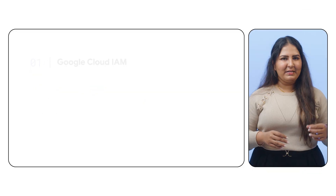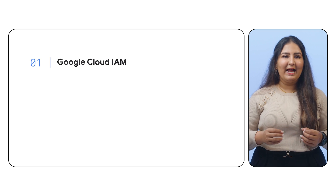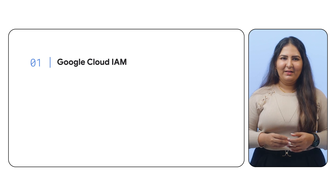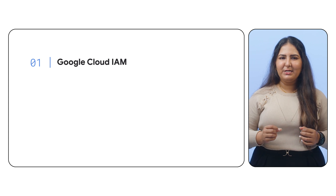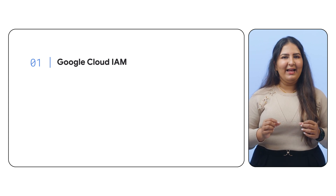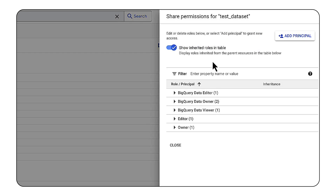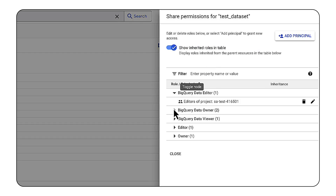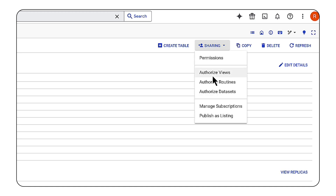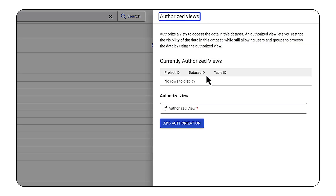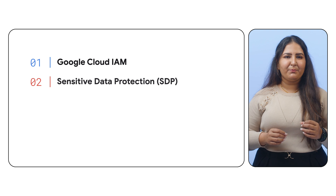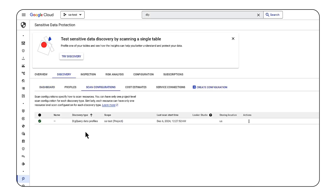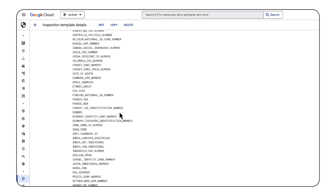Securing your AI development starts with robust model and data security. Implementing fine-grained access controls through Identity and Access Management, or Google Cloud IAM, ensures that only authorized personnel and services can interact with your valuable AI assets. To help you manage dataset permissions at a more granular level, BigQuery and Vertex AI also provide an additional level of access control mechanisms. Additionally, implement Sensitive Data Protection, or SDP, to proactively identify and safeguard sensitive information within these datasets to prevent potential exfiltration.